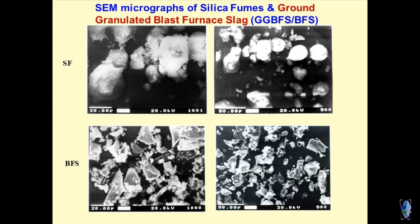If a material is extremely light — specific gravity of 0.5, 0.6, 0.7 — what type of problems might industries face apart from the health issues already discussed? The transportation of silica fume is very difficult.